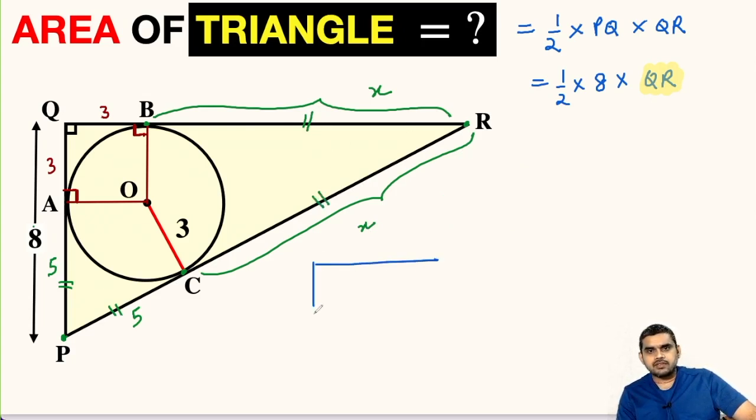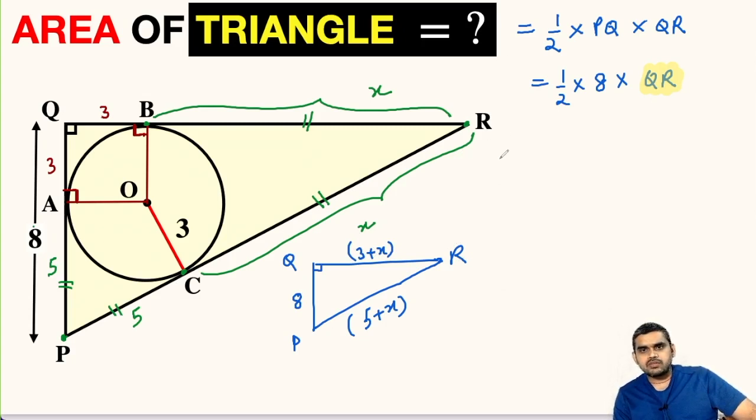Now let us focus on this right triangle. Point R, this is Q right angle and P. This hypotenuse can be written as 5 plus x. PQ is given as 8 units and QR as 3 plus x. So let us use Pythagorean theorem here. Hypotenuse squared, that is (5 + x)² is equal to 8² plus (3 + x)².